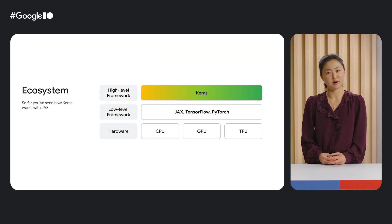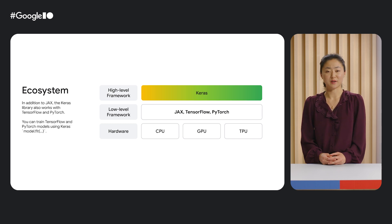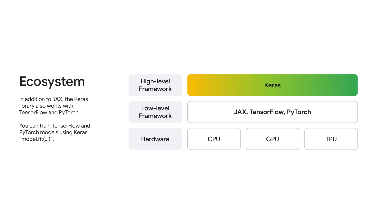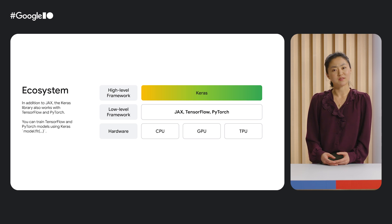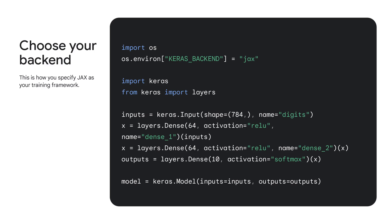Keras is part of a larger ecosystem. So far, you've seen it working with JAX, but it also works with TensorFlow and PyTorch. You can use the same Keras APIs to train models on any of these backends. This allows you to pick and choose the backend that best suits your need. Choosing your backend is incredibly easy — just set the Keras backend environmental variable. Here, we set it to JAX, and we can easily switch it to TensorFlow or PyTorch.